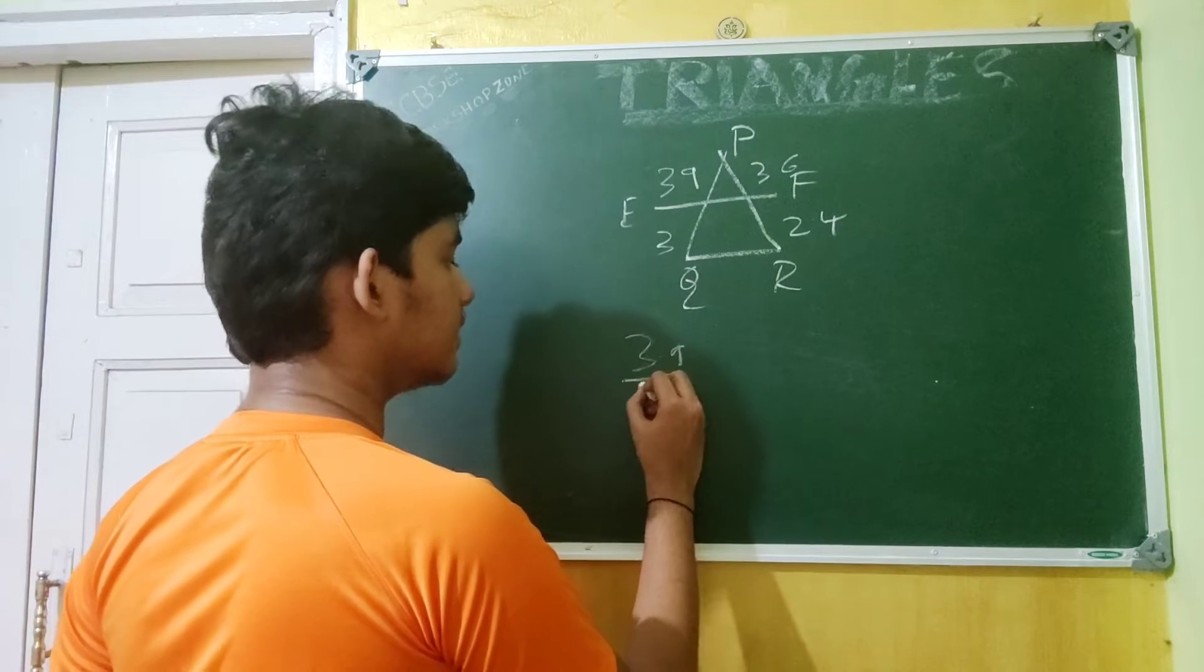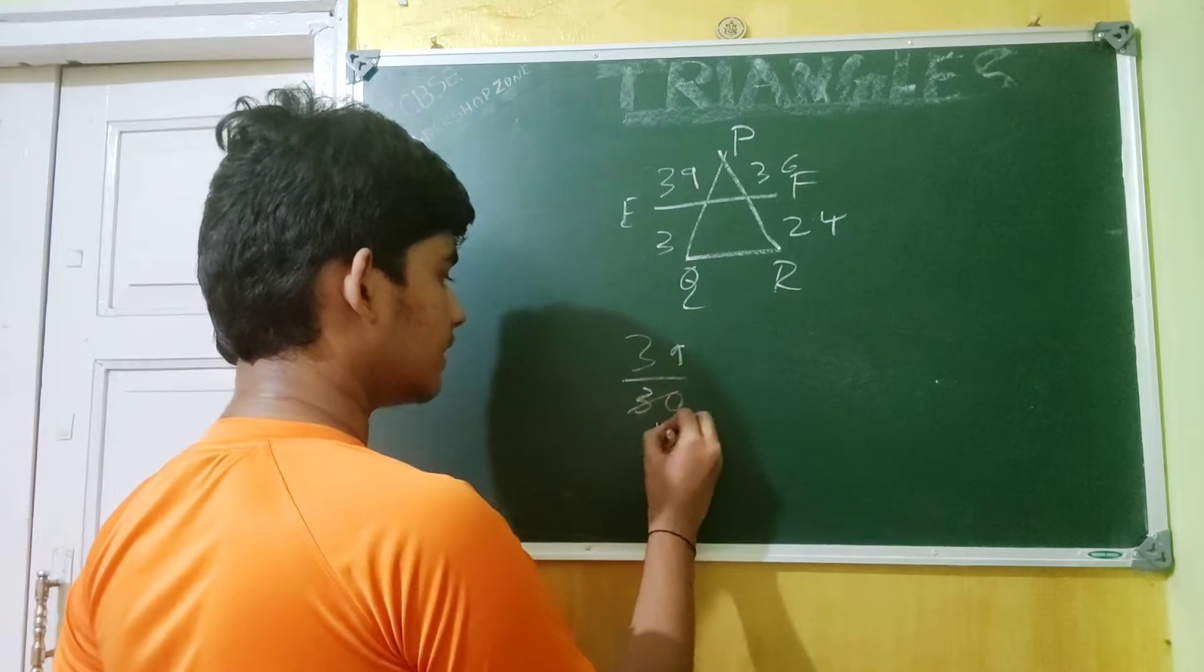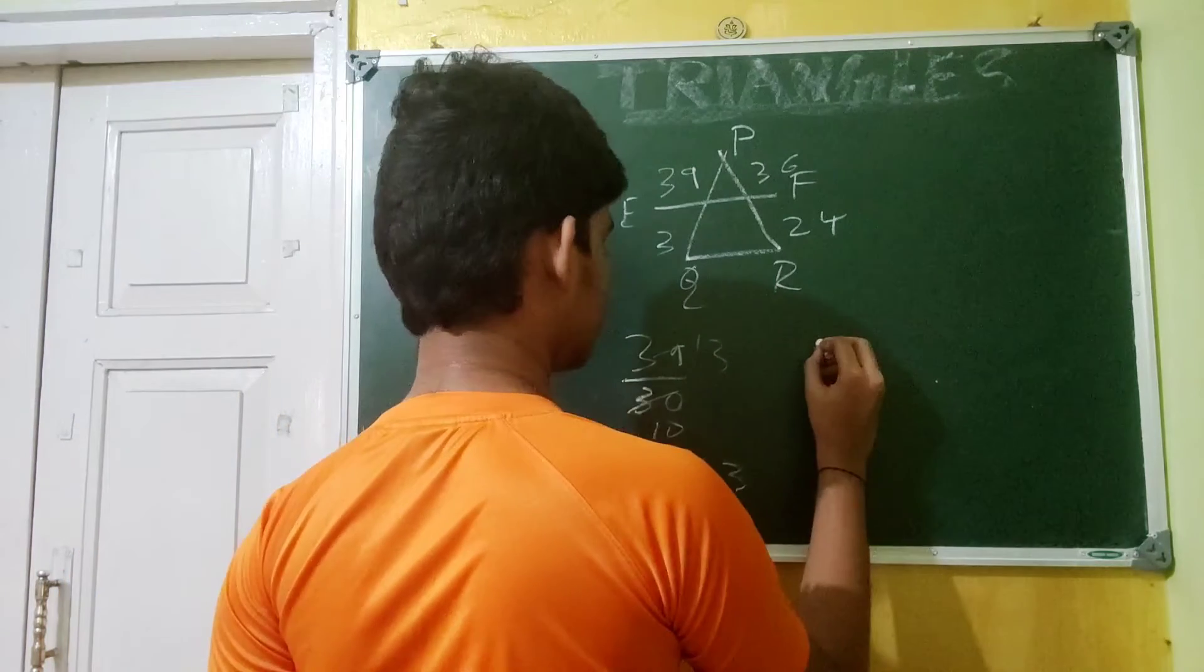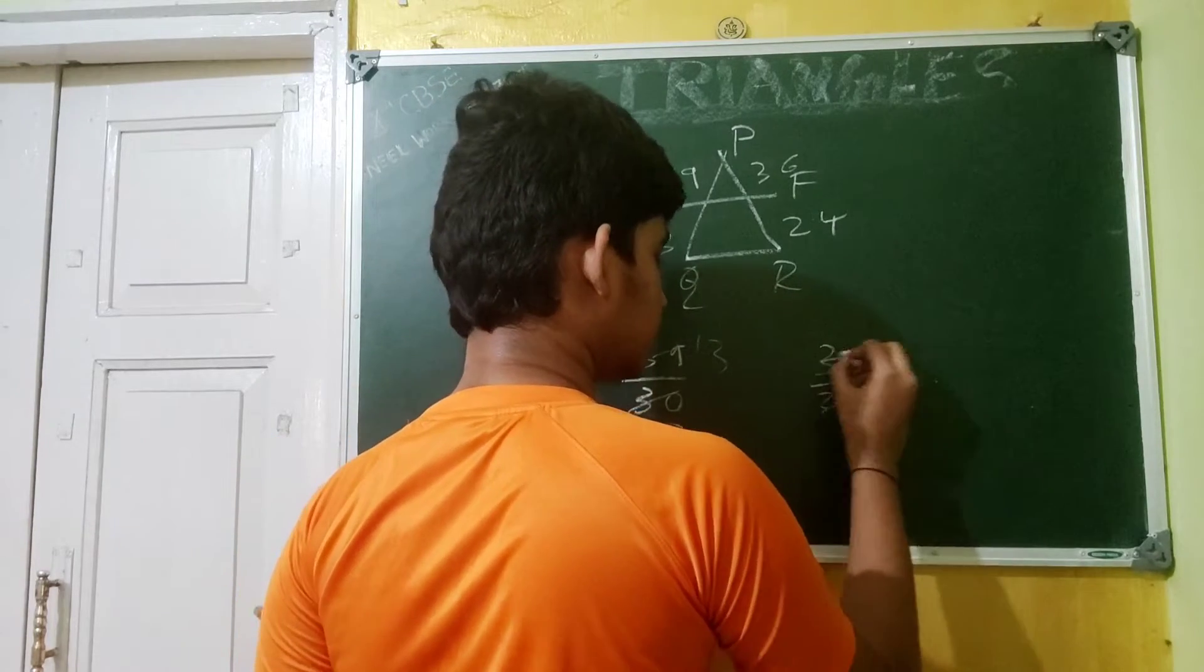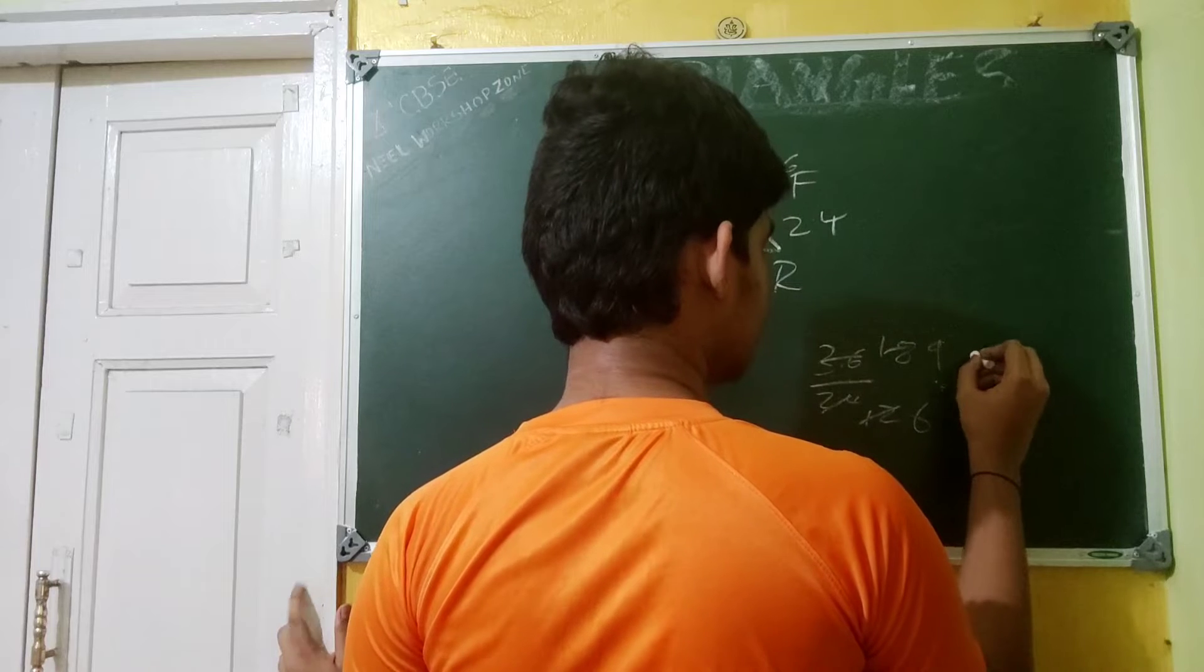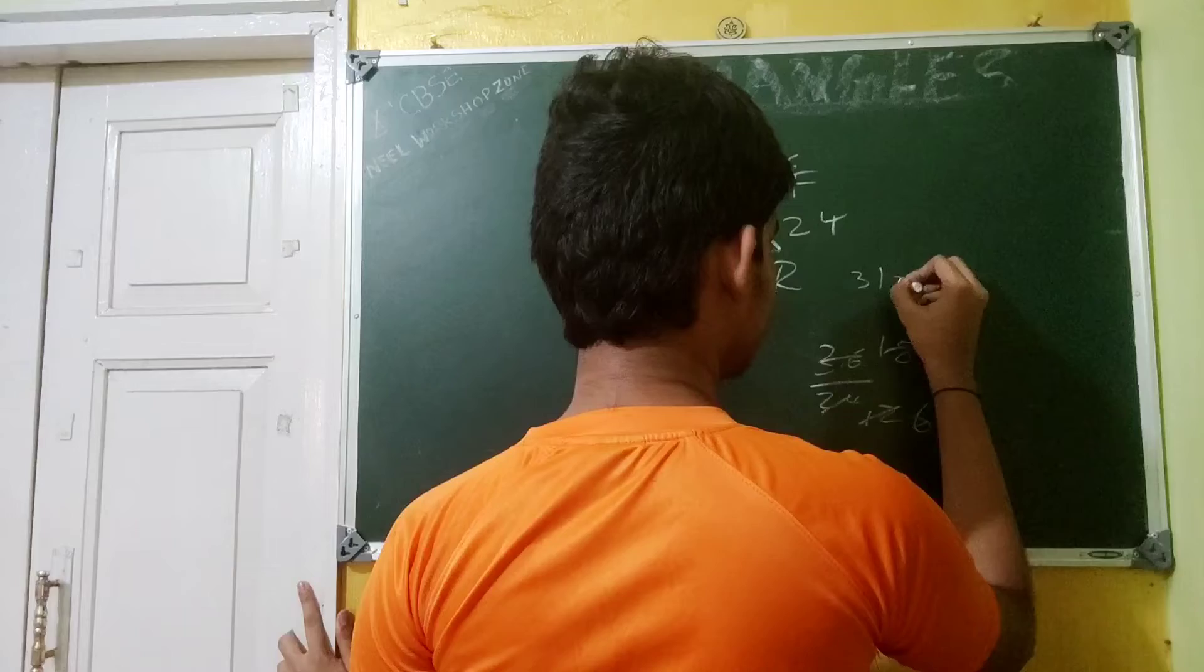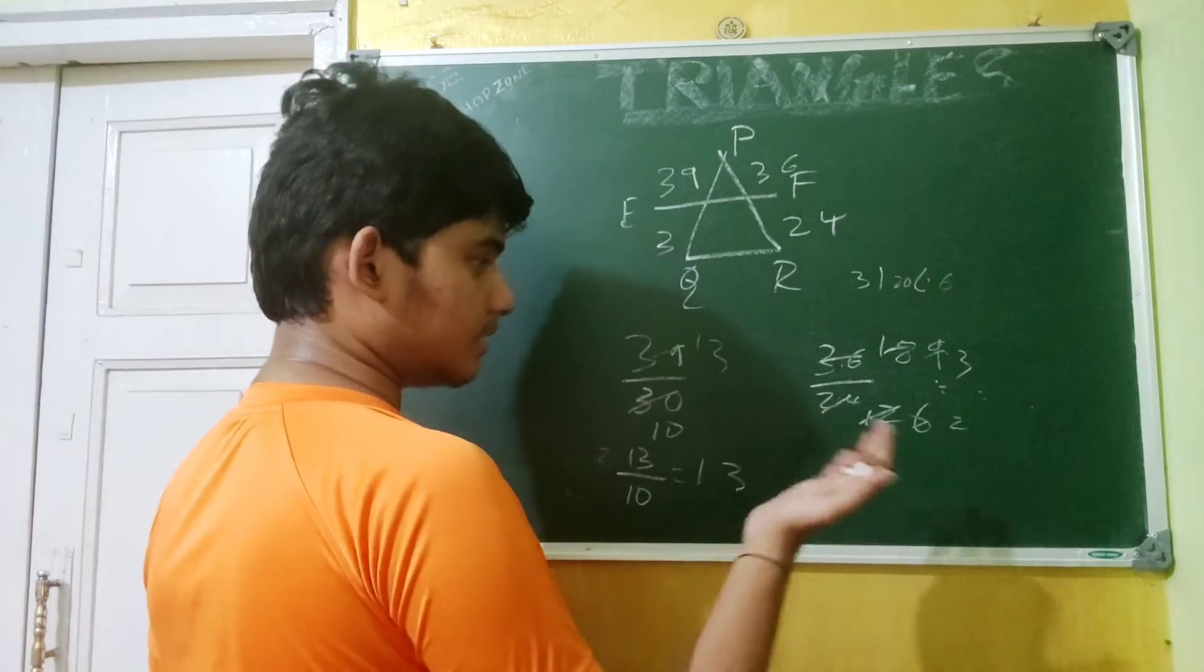So 3.9 by 3, let's say 3.0, or we can just remove it and add over here. So 39 by 30, which is equal to 13 by 10, which is equal to 1.3. On the other hand, you have 3.6 by 2.4. So if you take this out, we have 36 by 24. 9 by 6, so 9 by 6 can be equal to 3 by 2. So this is not equal to this because this is 1.3 and the answer for that is 3 by 2.